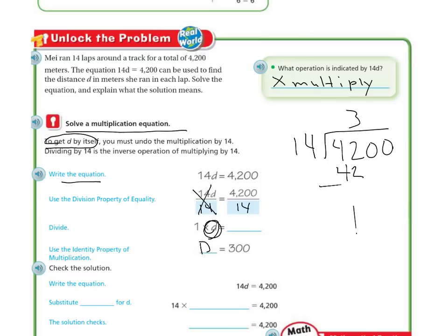14 goes into 42 three times. I subtract, bring down the 0. Keep going, bring down my 0. So D is going to equal 300.